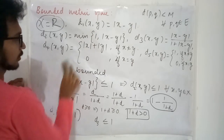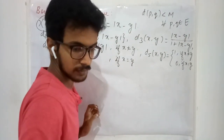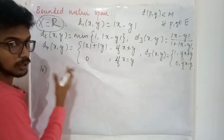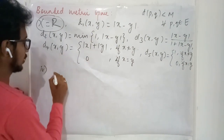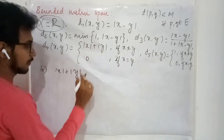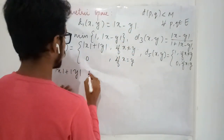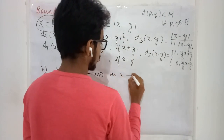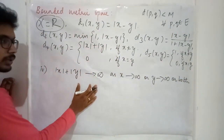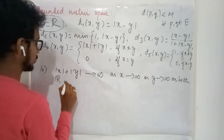Now let us see the fourth case: d4 = |x| + |y|. As the values of x and y increase, this quantity also goes to infinity — as x or y or both go to infinity, the metric value goes to infinity as well. So you cannot conclude that this is a bounded quantity, and under d4 your R is unbounded.